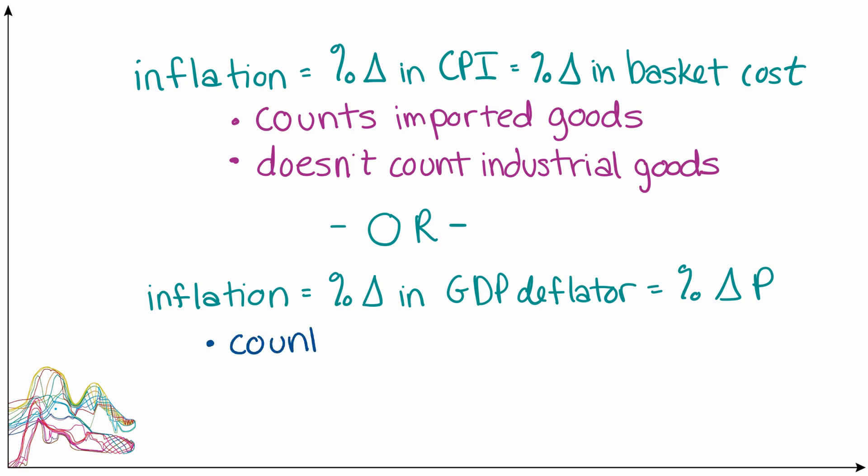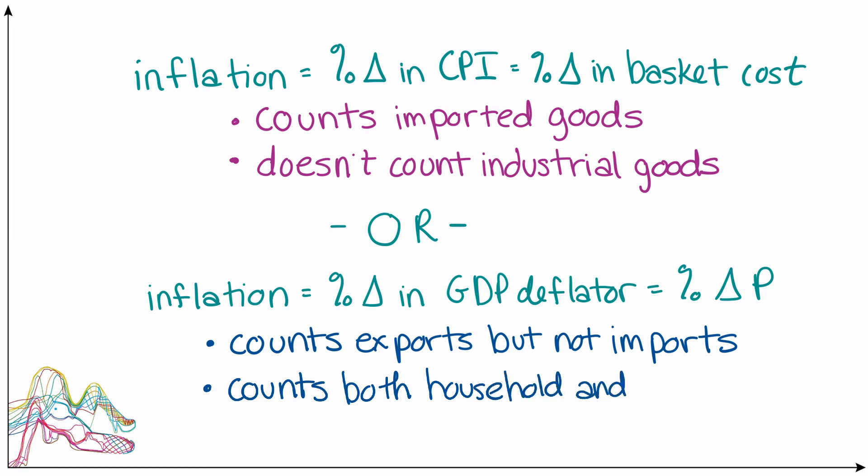Because gross domestic product or GDP specifically looks at domestic production, inflation calculated using the GDP deflator is going to count all of the things that are domestically produced in an economy. What that means is that this measure of inflation would count exports, or things that are produced domestically and sold to other countries, but won't count imports because imports are not produced in the domestic economy and therefore don't enter into GDP. Because economies tend to produce both things that households consume directly and things that are used by businesses to make more stuff, inflation calculated using the GDP deflator is going to count both what I'll call household and industrial goods. It includes more than just things that households typically purchase. It also includes things that businesses purchase as long as those things are produced in the domestic economy.